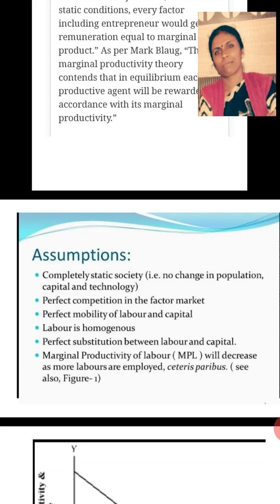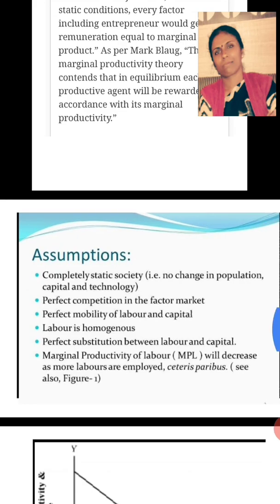The next assumption is perfect substitution between labor and capital. Substitution of one factor for another is possible so that production can be increased or decreased. This is necessary so that marginal productivity can be found by increasing or decreasing the quantities of factors of production. In case of scarcity of one factor, another factor can be substituted to maintain the same level of production.